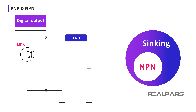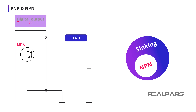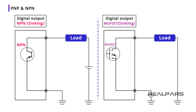If a PLC output module is listed as an NPN type, you can be sure that it is a sinking type. But if a PLC module is listed as a sinking type, it may or may not be an NPN type. Many vendors use other solid state devices such as MOSFETs to perform the switching.